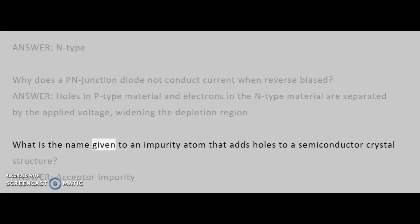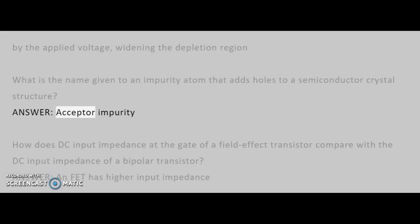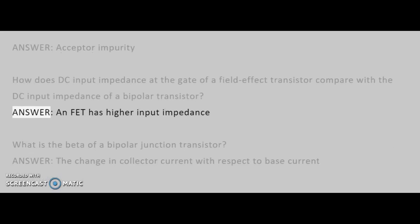What is the name given to an impurity atom that adds holes to a semiconductor crystal structure? Answer: acceptor impurity. How does DC input impedance at the gate of a field effect transistor compare with the DC input impedance of a bipolar transistor? Answer: an FET has higher input impedance.